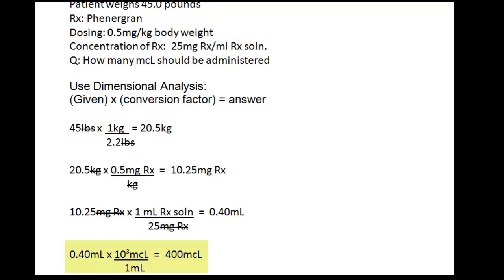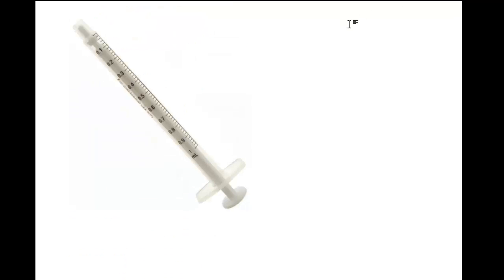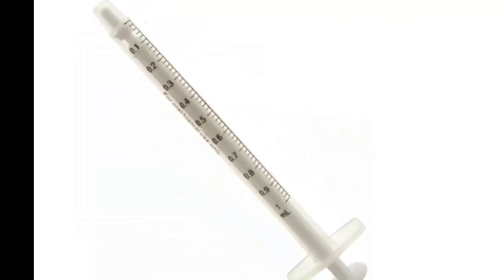And to give you a sense of how small 400 microliters is, or 0.4 milliliters, here's an image of a syringe that could be used to administer this drug. The scale on this syringe goes from 0 to 1 milliliter. So 0.4 milliliters would be right here, which is equivalent to 400 microliters, which is a very small amount.